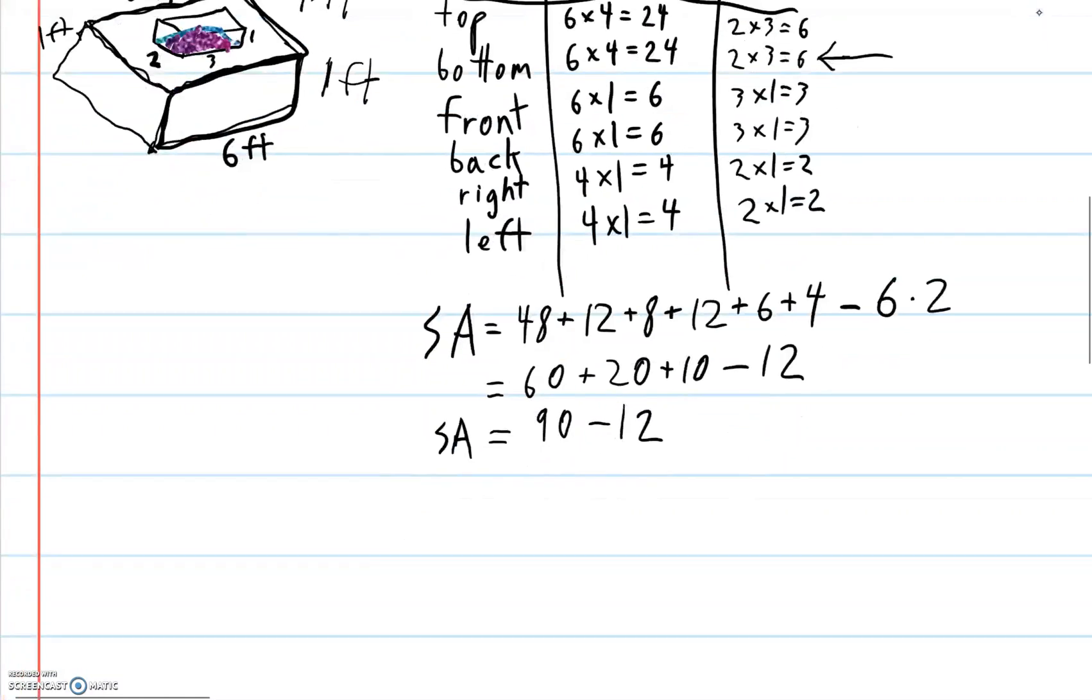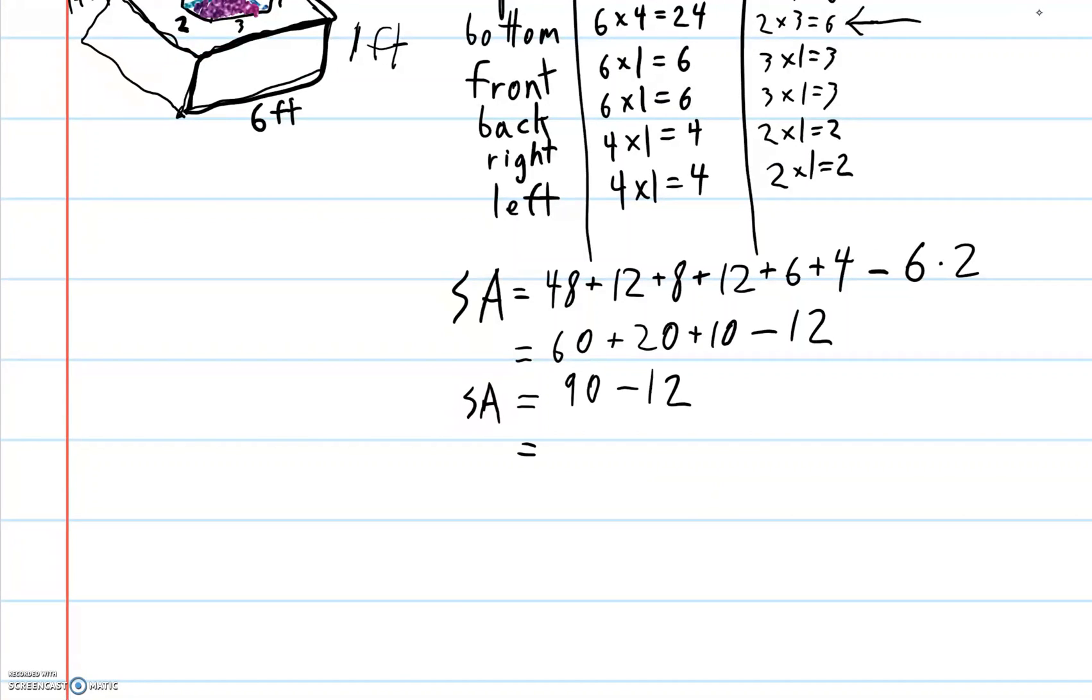And then 90 minus 12 equals 78. And so my surface area for this question is 78. And, oh yeah, I sometimes forget, this is really important. The units. Feet squared.